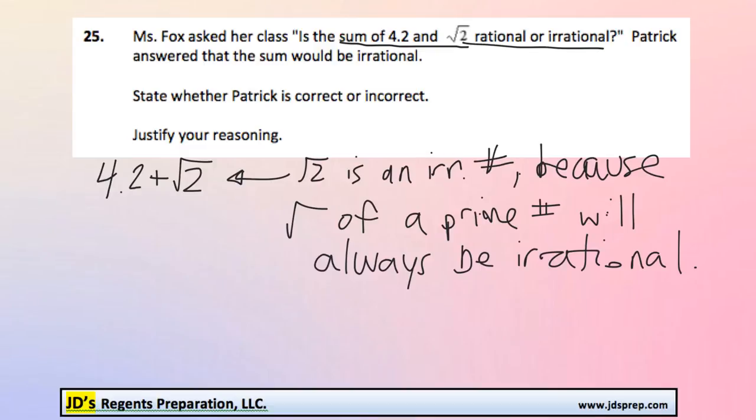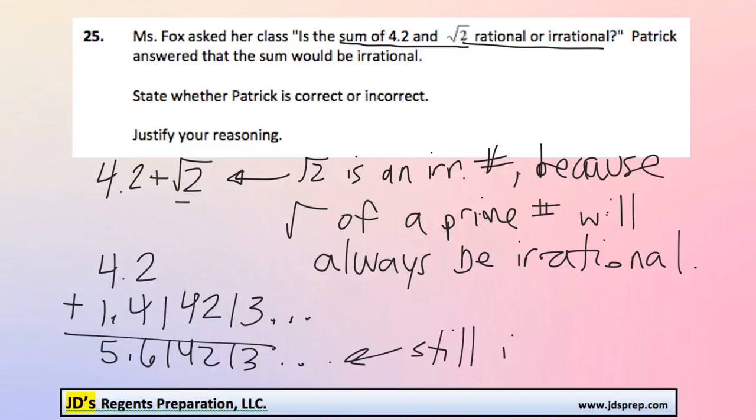We can demonstrate that by trying to add these two numbers. The square root of 2, if we calculate it, we get 1.414213 dot dot dot, because it's non-terminating and non-repeating. If we add those, we get 5.614213 dot dot dot, which is still irrational.